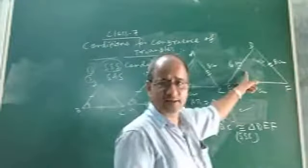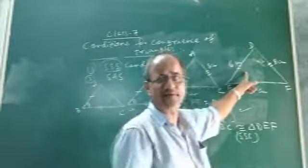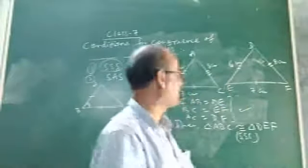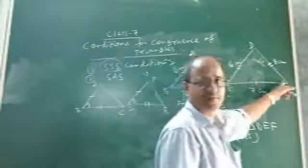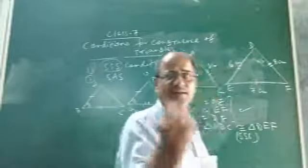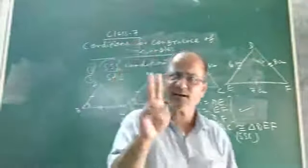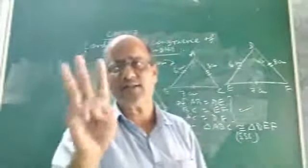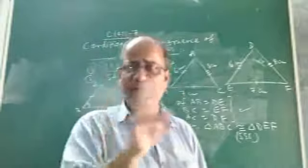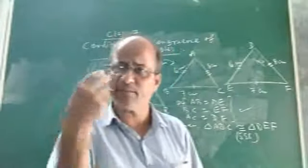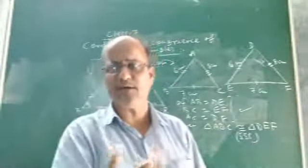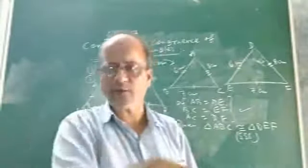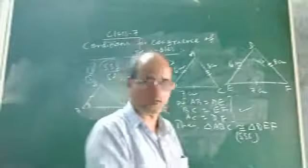Suppose AB and DE form one pair of corresponding sides, BC and EF form another pair, and AC and DF form the third pair of corresponding sides. Now, in order for two triangles to be congruent, it is necessary to show that three matching parts of both triangles are equal. Matching parts means either corresponding sides or corresponding angles.